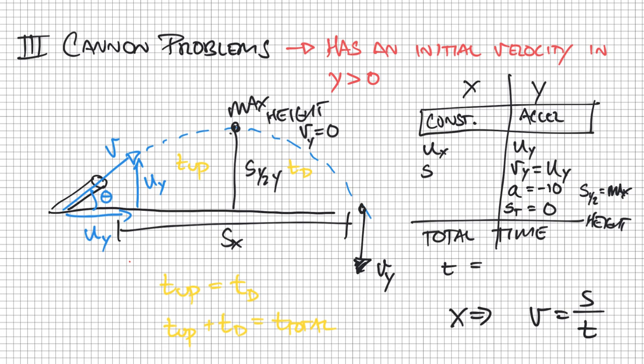So that's the main difference between cliff and cannon problems. Cliff problems, we have a horizontal velocity, a cannon problem. We're going to have this situation there breaking our initial velocity into its X and Y components.